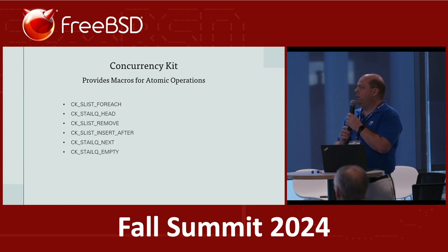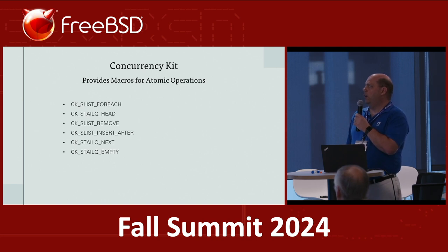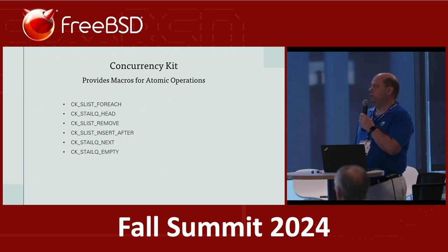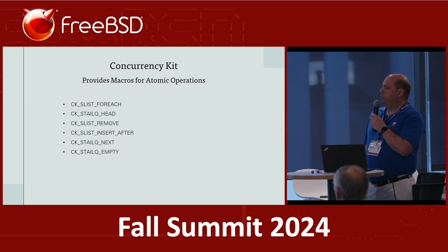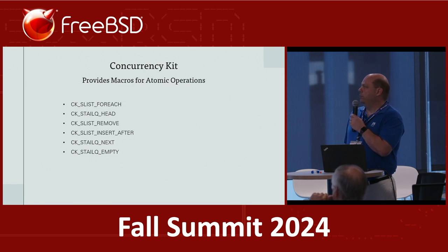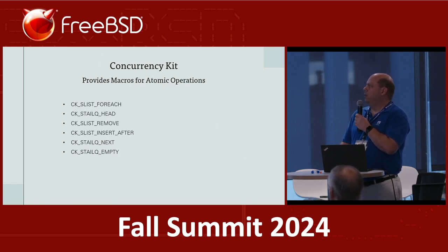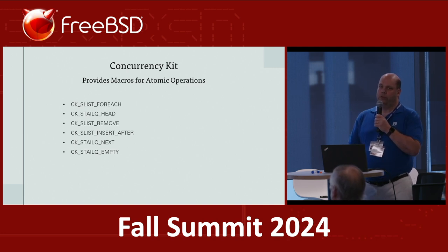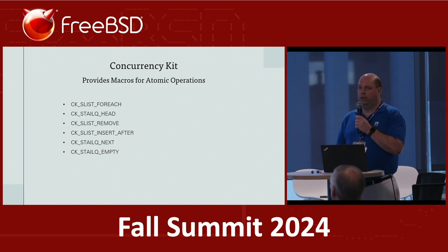The concurrency kit provides macros for doing all these atomic operations on lists and queues. Those are named with a CK underscore prefix followed by the type — whether it's a list or a queue. This provides all the macros needed for traversing lists and updating them atomically.